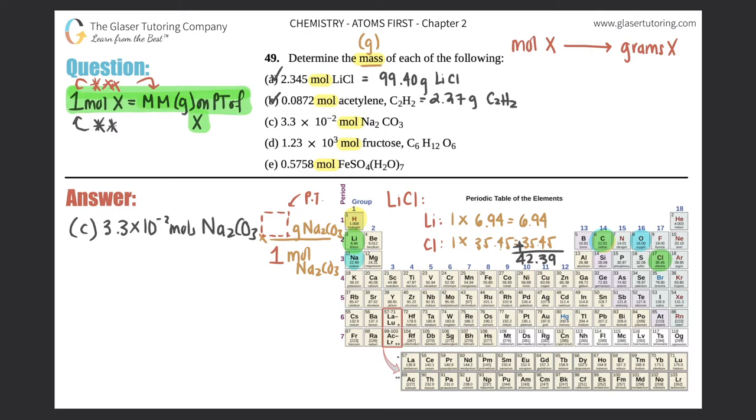So Na2CO3: we're using sodium, which is over here, sodium, carbon, and oxygen, which is over here. All right, so let's get down to it: two times 22.99 plus we have just one carbon so 12.01 plus three times 16, and you get 105.99. Cancel out moles, and that's your answer. Look how easy peasy these are, guys, right? 3.3 times 10 to the negative second times 105.99.